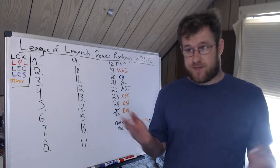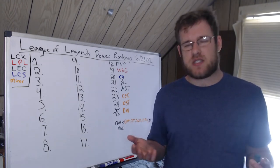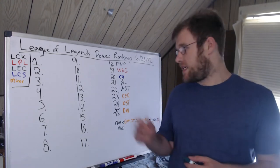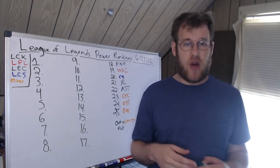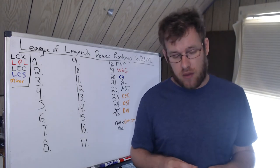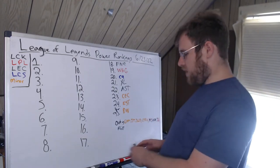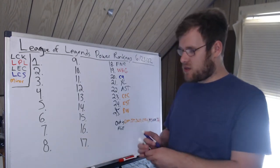They beat Rogue, they beat SK. The bot lane looked really, really good. Fnatic are good, Fnatic are a good team. They are definitely a top 20 team. The loss to Excel should not be too big of a deal. 17th, new to the list, I have 100 Thieves.